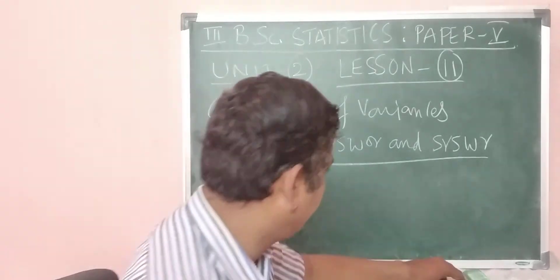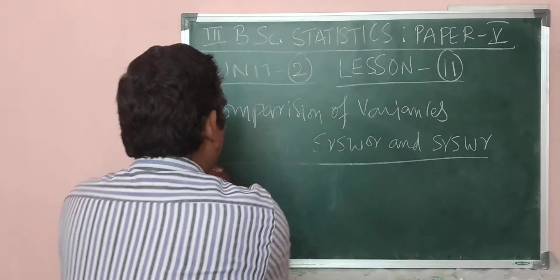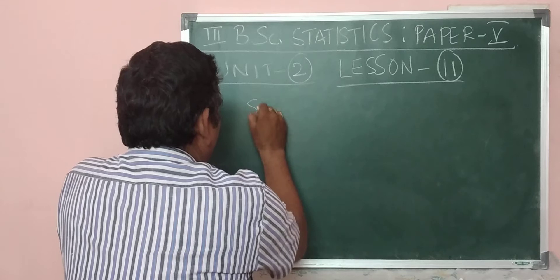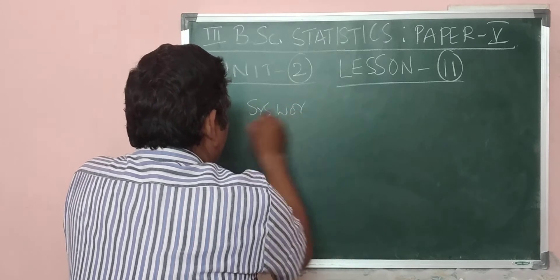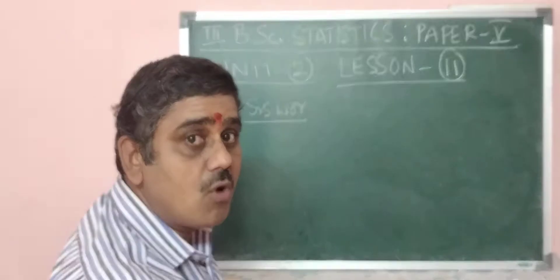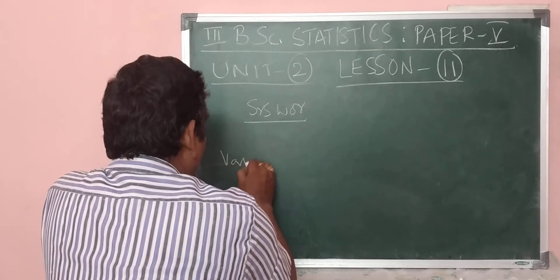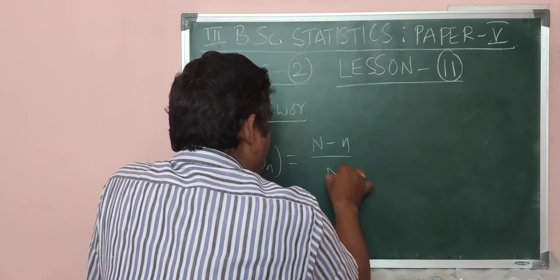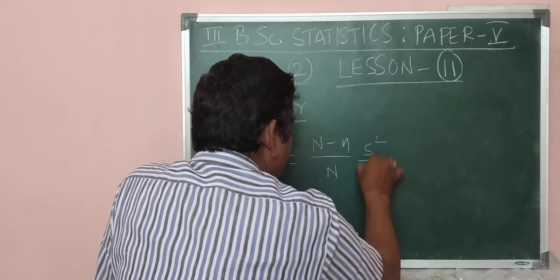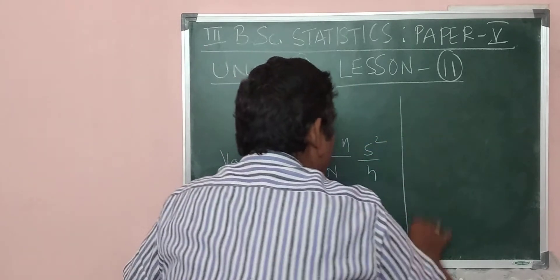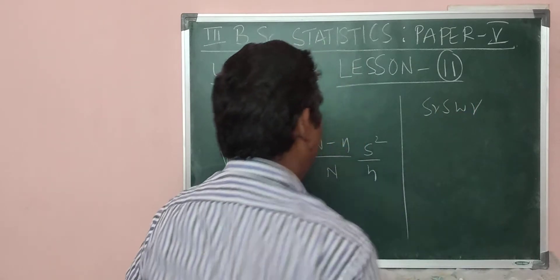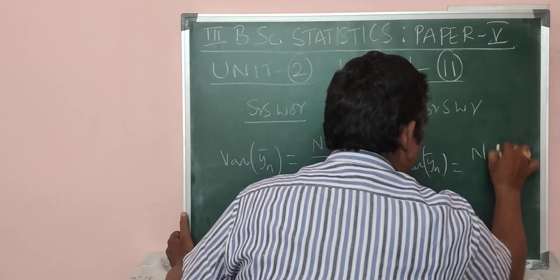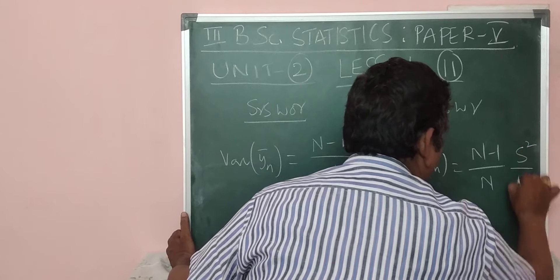So we start by writing the variances in both techniques. In SRSWOR, the formula for the variance of Y-bar is: (N minus n) divided by N, multiplied by S-squared over n.